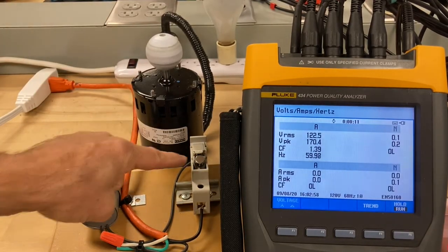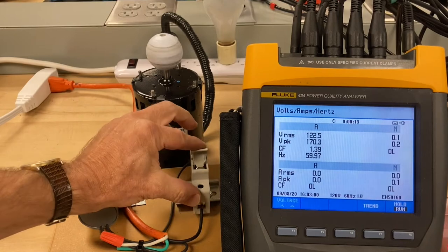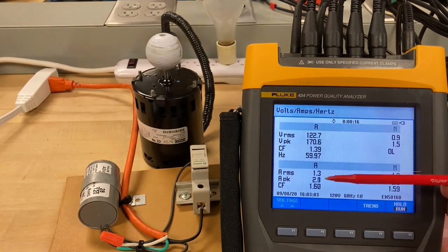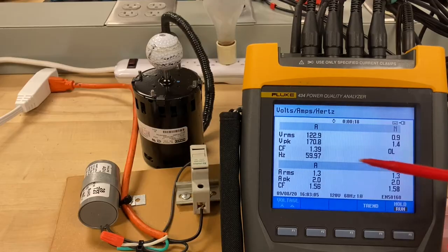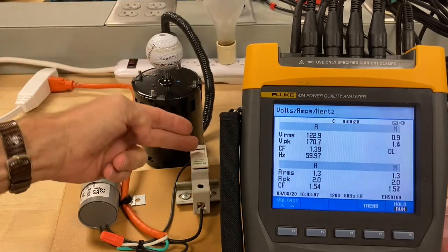Let's turn that off. Let's look at the capacitor. I'll turn the capacitor on, see what it draws. 1.3 amps. So the motor is 1.4, this is 1.3.